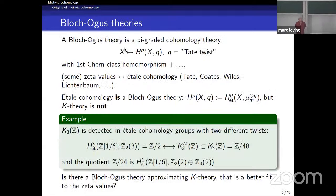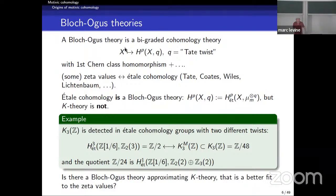Now on to Bloch-Ogus cohomology theories. This is a bigraded cohomology theory with a cohomological degree P and a second variable Q, which you think of as a Tate twist. Some zeta values are closely related to étale cohomology, and étale cohomology is a Bloch-Ogus theory — here Z^P(X,Q) would be the P-th étale cohomology group with coefficients in the Q-th tensor power of the sheaf of n-th roots of unity. K-theory is not a Bloch-Ogus theory, and K_3(Z) is detected in étale cohomology groups in two different places.